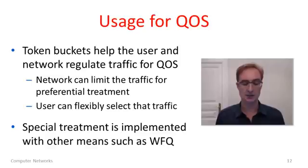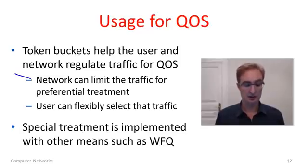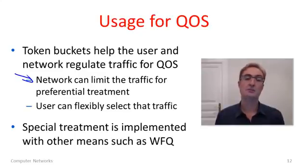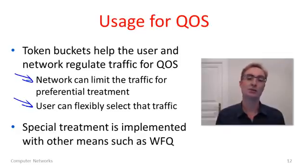So that's token buckets. We've seen how token buckets can constrain traffic, which can help both the user and the network. The network is able to limit the traffic coming into it so that it can meet any promises about preferential treatment for some kinds of traffic, and the user is still able to inject a wide range of traffic.